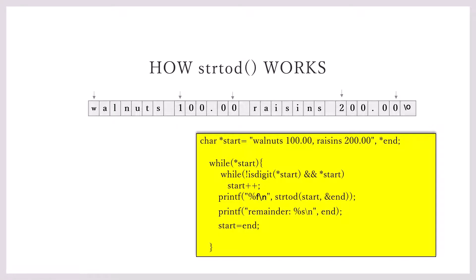How does strtod work? Just put in that same code that we wrote. As I said when we were writing the code, it's reading past all these characters. And then when it reaches the number, it's going to report this particular floating point value as the result.